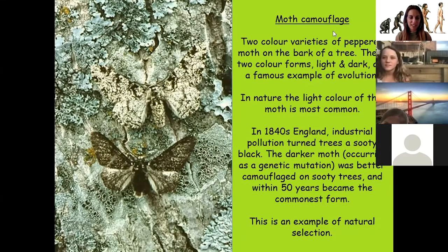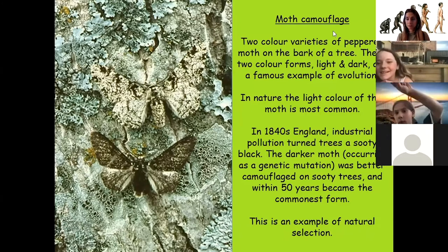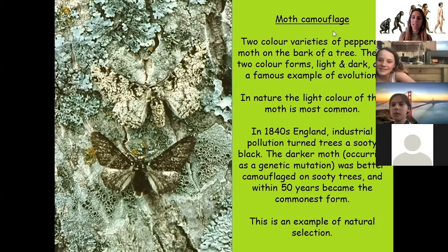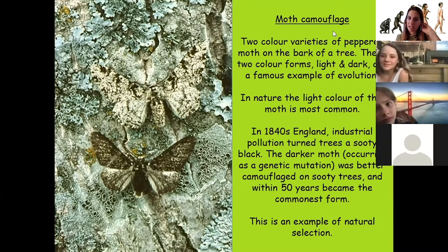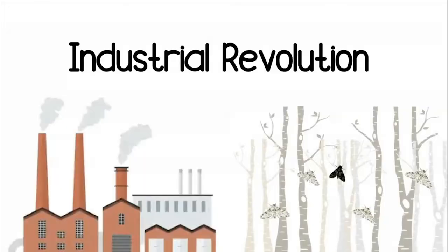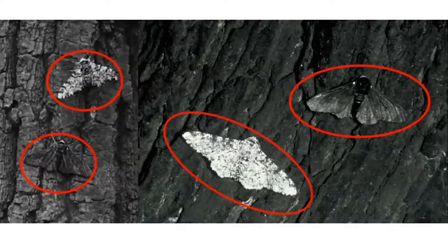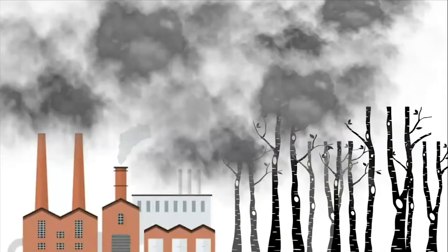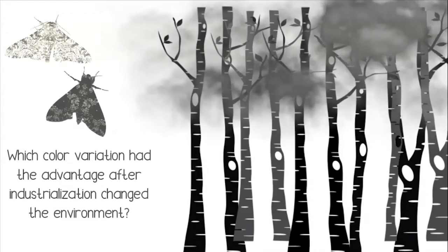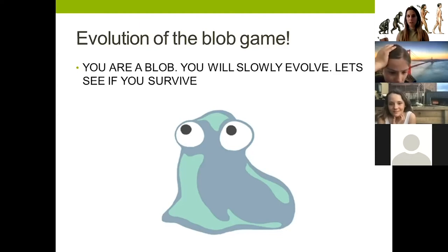There's a very famous example in this photo. Can you see there are two moths? One is camouflaged at the top and one is visible at the bottom. Originally, the camouflaged one was the majority because fewer birds would eat it. But then in England in the 1800s, the Industrial Revolution brought lots of smoke, smog, and soot from chimneys that made the trees black. Then birds started eating the white ones, so natural selection happened and the black moth became the more dominant species.